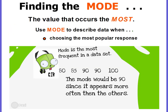Now let's talk about the mode. The mode is the value that occurs the most, and we use the mode to describe data when choosing the most popular response — for example, what is the grade you receive the most? In this example, with data 80, 85, 90, 90, and 100, the mode would be 90 because it appears more than any of the other numbers. There are two 90s, but only one 80, one 85, and one 100. So the mode — the one that appears the most — would be 90.